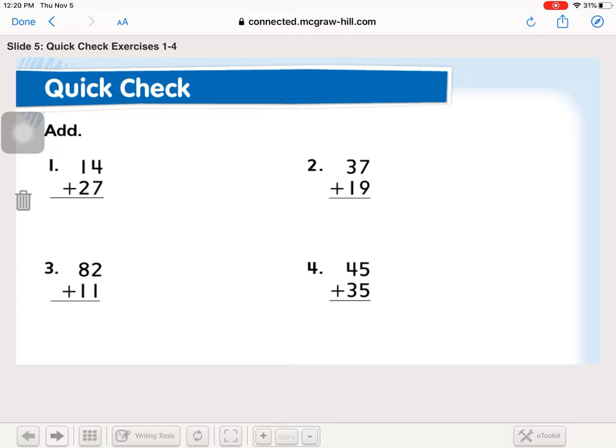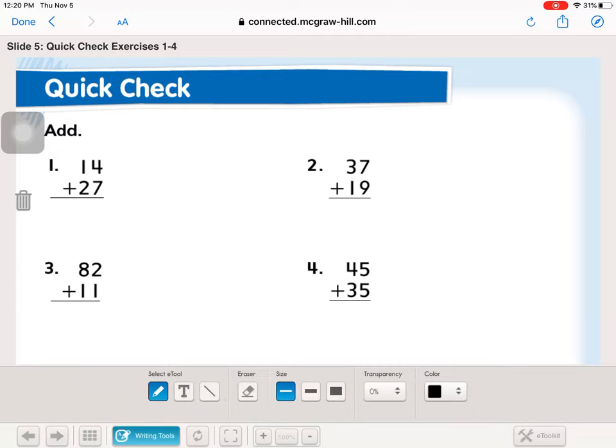These are like the ones that we practiced yesterday, so we're going to start in the ones. 4 plus 7. 7, 8, 9, 10, 11. 2 plus 1 plus 1 is 4. 7 plus 9. I'm going to make a 10 and do 10 plus 6 instead, which is 16. Regroup. 1, 10. 1, 10 plus 3 tens plus 1, 10. 5 tens.